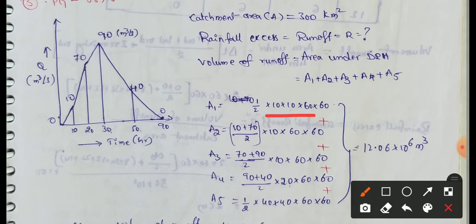Next is A2. A2 is the portion from 10 to 20. In this portion, first ordinate is 10, second ordinate is 70. So 10 plus 70 by 2 into time base 10, which is the difference from 10 to 20, into 60 into 60. This gives the second area.